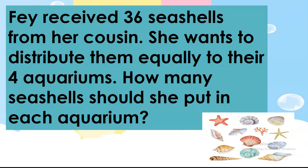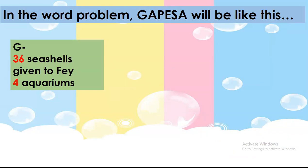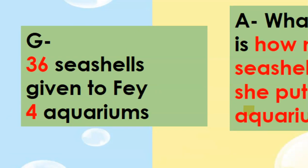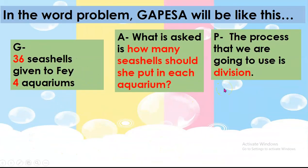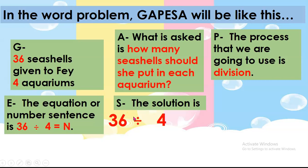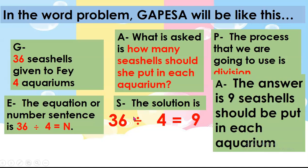Now we have another example. Faye received 36 cichlids from her cousin. She wants to distribute them equally to their 4 aquariums. How many cichlids should she put in each aquarium? In the word problem, GAPESA will be like this. For letter G, we have 36 cichlids given to Faye and 4 aquariums. Letter A: what is asked is how many cichlids should she put in each aquarium? Letter P, the process is division. The equation is 36 divided by 4 equals N. The solution is 36 divided by 4 equals 9. So the answer is 9 cichlids should she put in each aquarium.